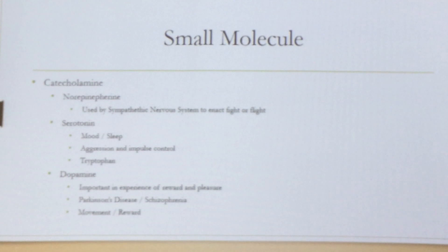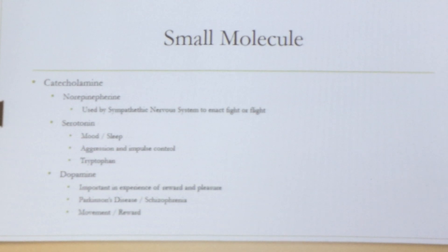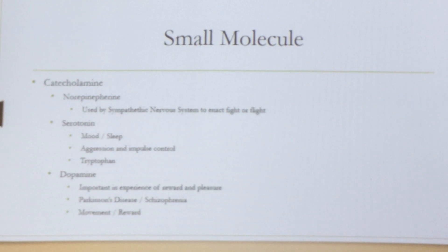Under small molecule, another type is catecholamines. First under that is norepinephrine — we used to call this noradrenaline. It's used by the sympathetic nervous system to help enact fight-or-flight. So you've got acetylcholine that will calm fight-or-flight, but your norepinephrine helps rev up your body.